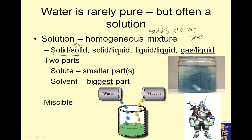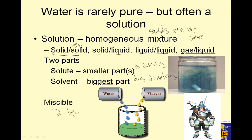There are two parts. The solute is the smaller part, and the solvent is the biggest part. The solute is dissolved, and the solvent does the dissolving. Sometimes, if you have two liquids that are miscible, it means they dissolve in each other.